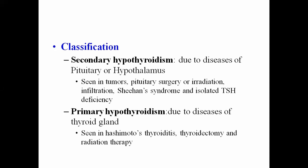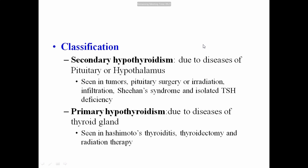Like hyperthyroidism, hypothyroidism can be classified into two groups: secondary hypothyroidism (due to disease of the pituitary or hypothalamus — generally seen in tumors, pituitary surgery, infiltrations, Sheehan's syndrome, and isolated TSH deficiency) and primary hypothyroidism (due to disease of the thyroid gland itself — most commonly Hashimoto's thyroiditis, where immunoglobulins against thyroid peroxidase enzymes are produced, thyroidectomy, and radiation therapy).